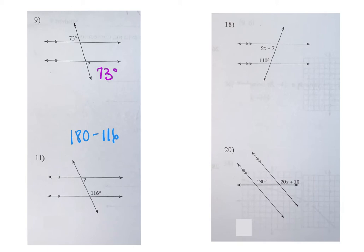You have to know the difference — if you don't, you're going to get these wrong. They're very simple, so you don't want to mess them up just because you don't remember whether they're supplementary or the same. All of them are the same except for consecutive interior. The next set does exactly the same thing, but you're just solving for X.